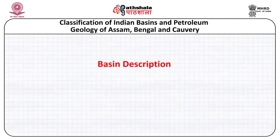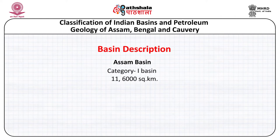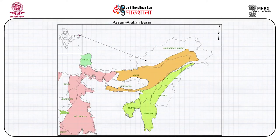We will now discuss some petroliferous basins of India. One of the major petroliferous basins is the Assam basin, situated in the northeastern part of India and categorized as a category 1 basin. It covers an area of 11,600 square kilometers, with major tectonic elements being the Assam Shelf, Naga Schuppen belt, and Assam-Arakan fold belt.